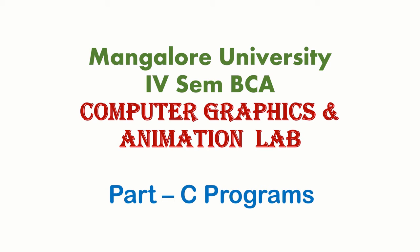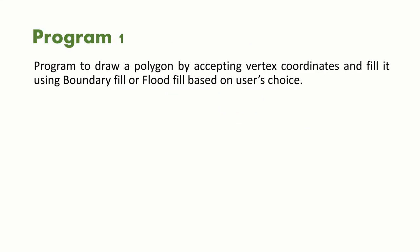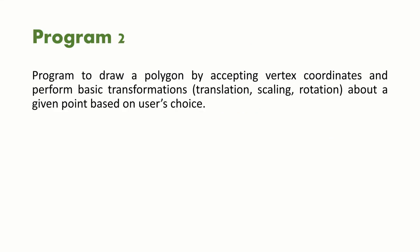In this video we will discuss about Mangalore University 4th Semester BCA Computer Graphics and Animation Lab Part C Programs. Program 2: Write a program to draw a polygon by accepting vertex coordinates and perform basic transformations — translation, scaling, rotation about a given point based on user's choice.